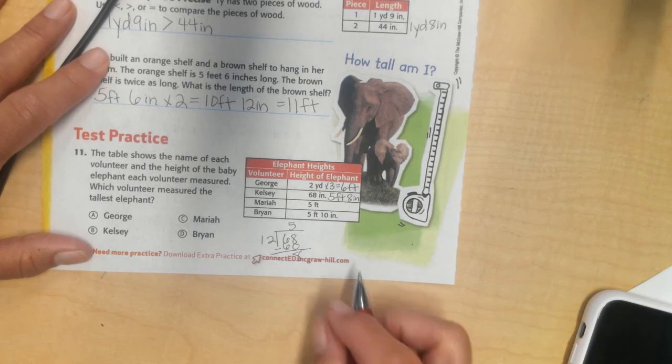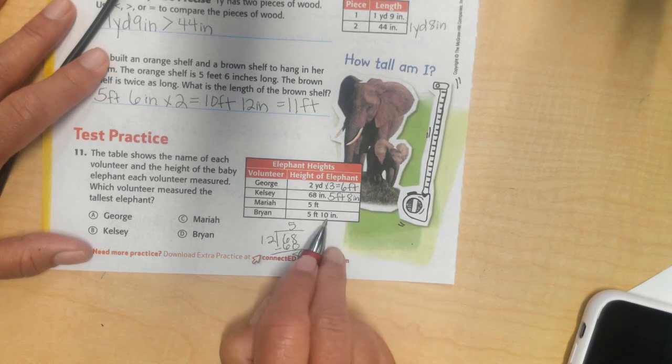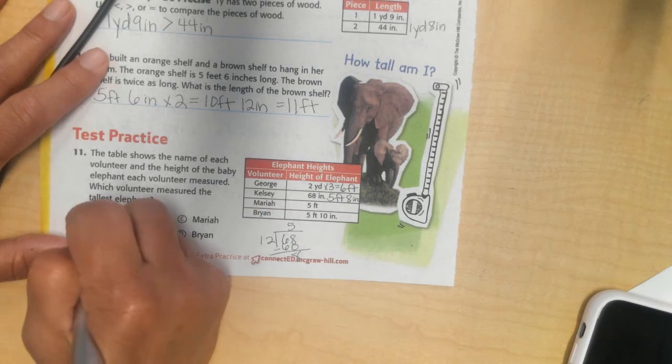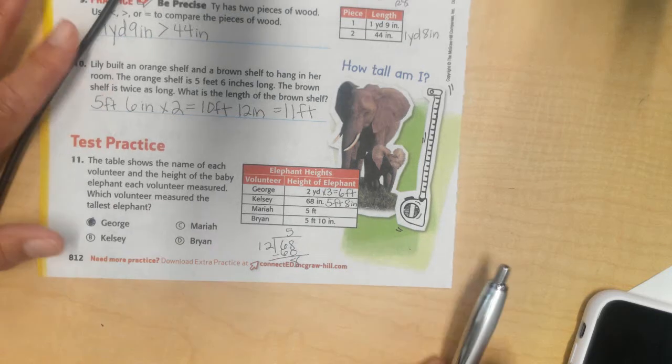Now, I can compare the height of my elephants. Right? 5 feet, 5 feet 10, 5 feet 8, 6 feet is my biggest elephant. George measured that elephant. And there you are.